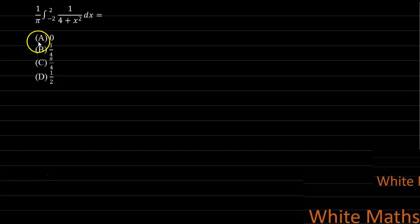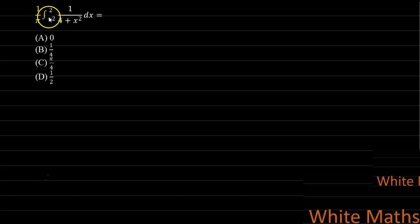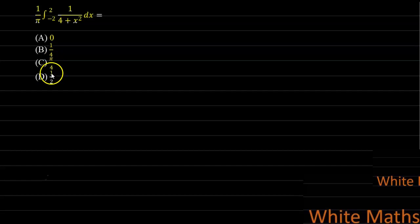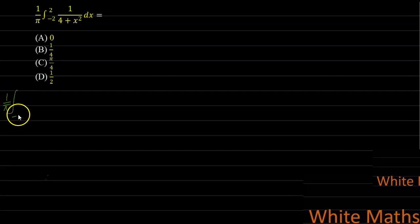In this section we will solve a question from the topic of integrals, specifically from the subtopic properties of the definite integral. The question is: (1/π) ∫₋₂² 1/(4+x²) dx, and the options are 0, 1/4, π/4, and 1/2.